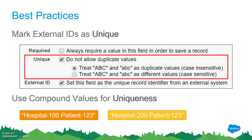Best practices. The external ID field should be unique. That's important because when you're doing the Upsert operation, if Salesforce finds two or more records with the same value in that external ID field, it's going to kick them out as errors because it's ambiguous — it doesn't know which one to actually update. So you should mark this value as unique.